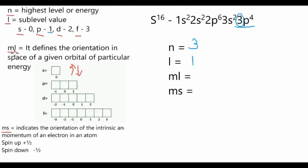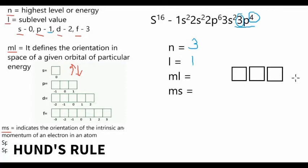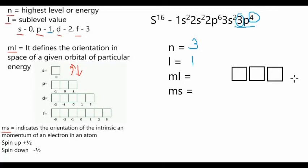For the magnetic quantum number, we ended in letter p. The p sublevel has 3 boxes. We draw three boxes for p, and we need to place 4 electrons since the exponent of p is 4. Remember that each box contains 2 electrons, but there is what we call Hund's rule.